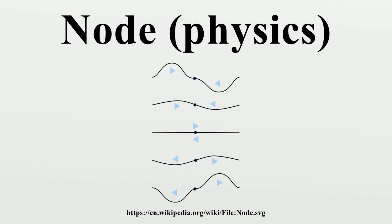Free boundary node positions occur at λ/4, 3λ/4, 5λ/4, 7λ/4, and so on. A sound wave consists of alternating cycles of compression and expansion of the wave medium. During compression, the molecules of the medium are forced together, resulting in increased pressure and density. During expansion, the molecules are forced apart, resulting in decreased pressure and density.